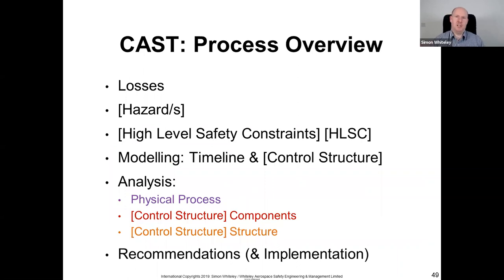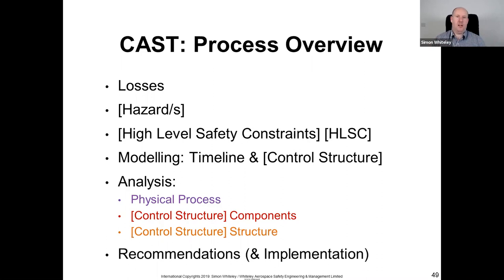The CAST process on one page: we define losses, define the hazards that contribute to those losses, and define the high-level safety constraints intended to control those hazards. Then we do modelling — creating a timeline, a control structure model — and then we analyse that model in three iterative parts: the physical process, the control structure components, and the control structure itself. Finally we make recommendations and follow through with implementation.